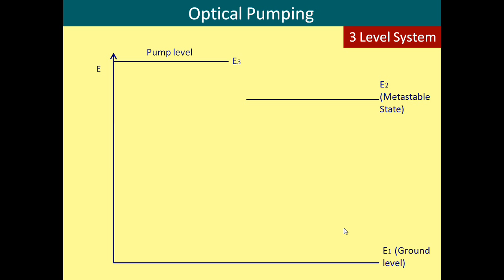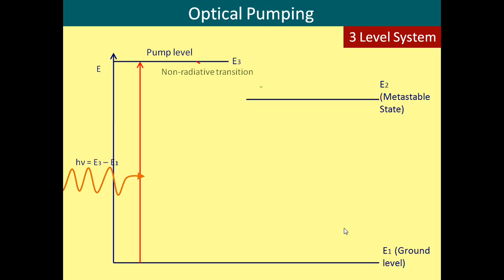So we need to add another level to this system. This added level is referred to as the pump level. The medium is irradiated with light of the correct frequency to pump atoms from the ground level to the pump level. Although non-radiative transitions do not produce useful photons, they are still needed to increase the laser efficiency. The next step is a non-radiative transition to E2, which is called the metastable state. The non-radiative transition is very fast, whereas at the metastable state the atoms can remain there for a long time. Therefore, the atoms can accumulate here, which increases the ratio of the number at E2 compared to the ground state.